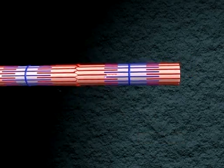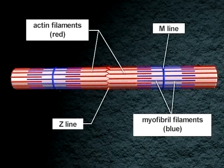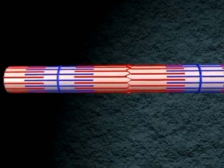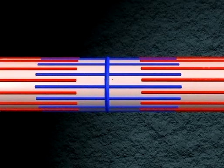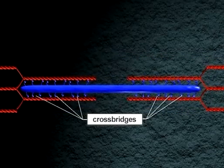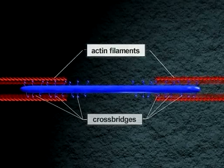Each myofibril is composed of many actin and myosin filaments. Projections from the myosin filaments, the myosin cross bridges, interact with sites on the actin filaments to produce contraction.